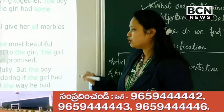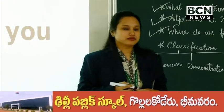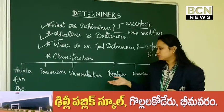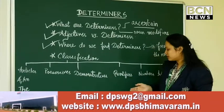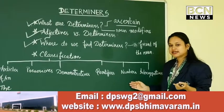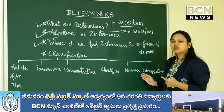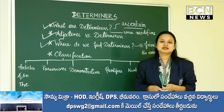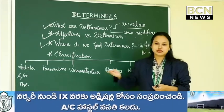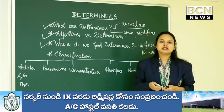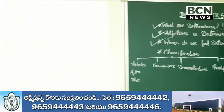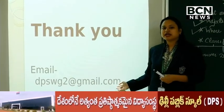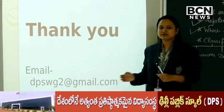I hope you understood the classifications. Articles — a, an, the. Demonstratives — this, that, those. Possessives — my, your, her. Quantifiers — some, little. Numbers — one, two, thirty, first, second. Interrogatives — which, what, whatever. These are all the classifications of determiners. Thank you for being with us. Any doubts you have, you can mail us at the email ID given, and we shall take up the topic in our next class. We shall read further.